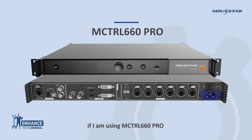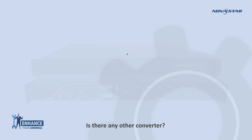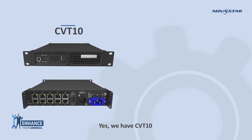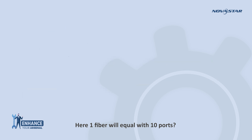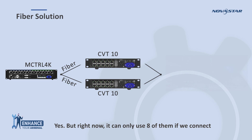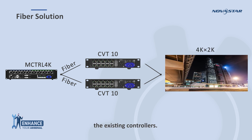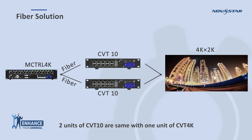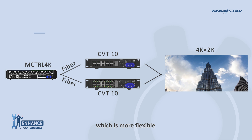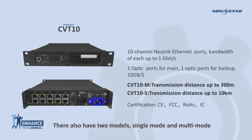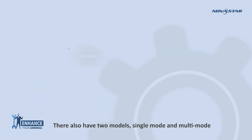Maybe you will ask: if I am using MCtrl 660 Pro, one fiber is enough — is there any other converter? Yes, we have CVT10. It is a new product. There are two fiber ports and 10 Ethernet ports. One fiber is primary, another is backup. One fiber equals 10 ports, though right now only eight of them can be used with existing controllers. Two units of CVT10 are equivalent to one unit of CVT4K, which is more flexible. Similar to CVT4K, they also have two models: single-mode and multi-mode.